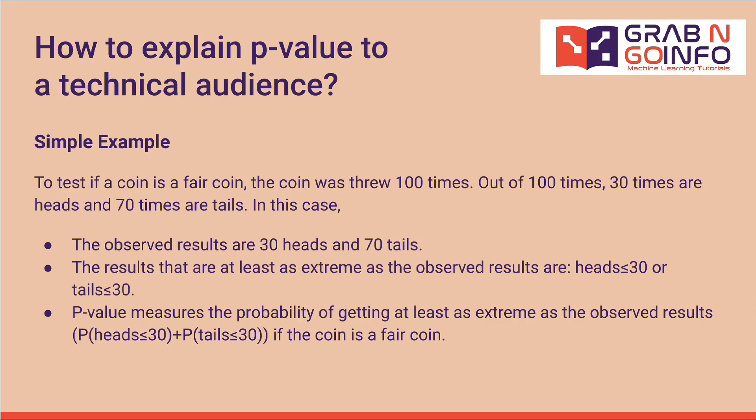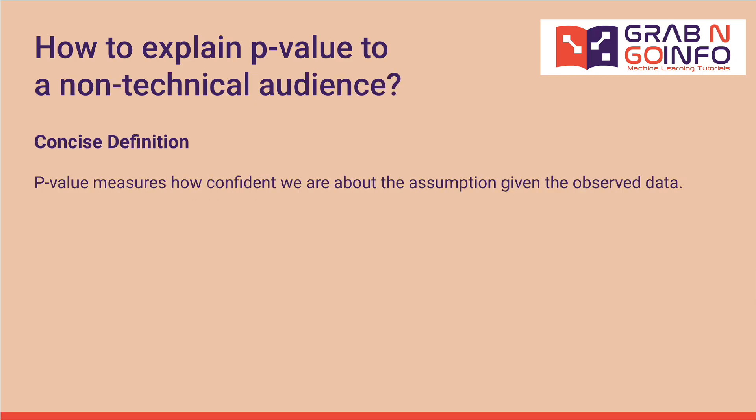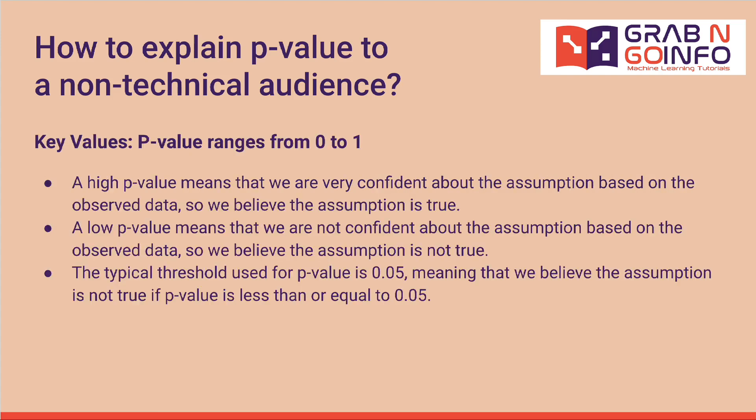When explaining p-value to a non-technical audience, we can say that p-value measures how confident we are about the assumption given the observed data. P-value ranges from 0 to 1. A high p-value means we are very confident about the assumption based on the observed data, so we believe the assumption is true. A low p-value means we are not confident about the assumption, so we believe the assumption is not true. The typical threshold is 0.05.